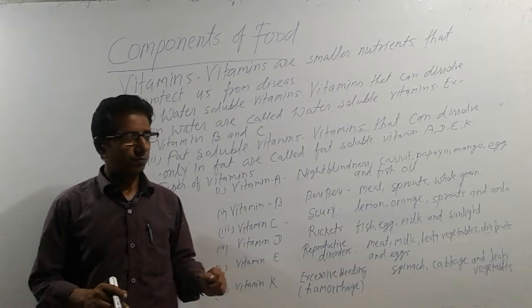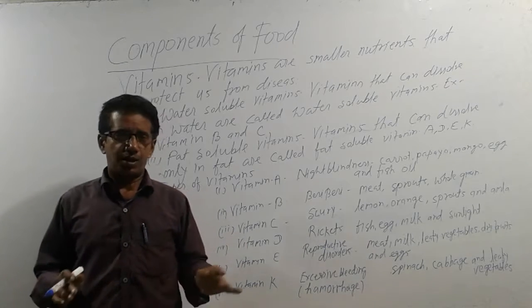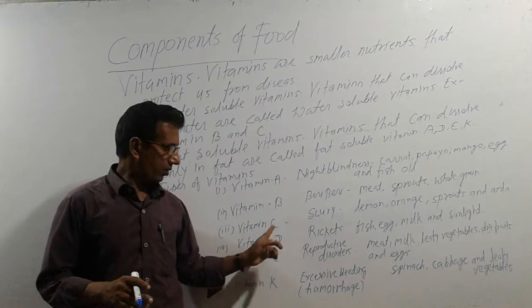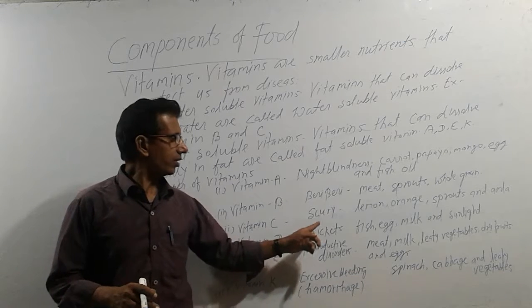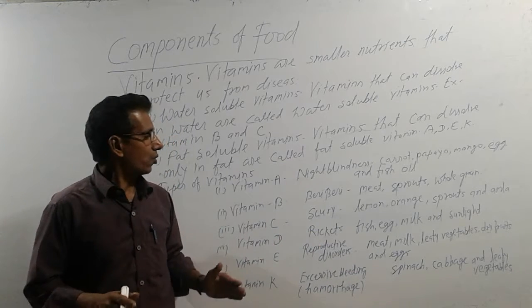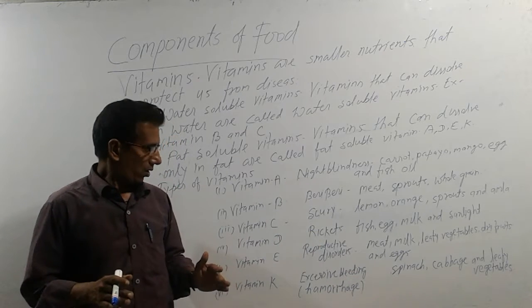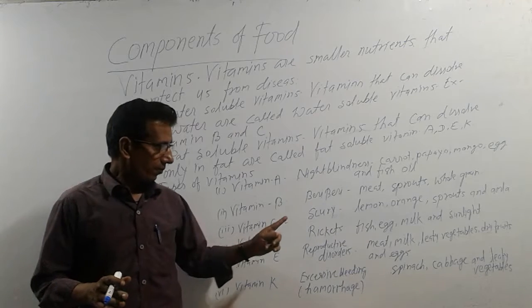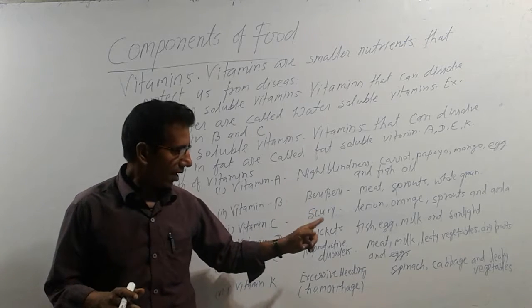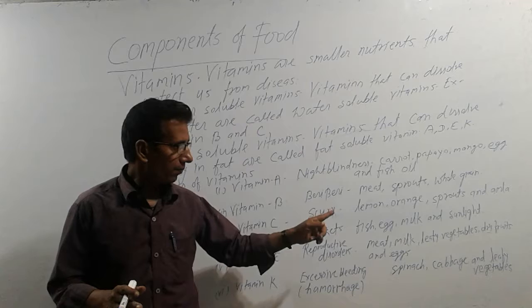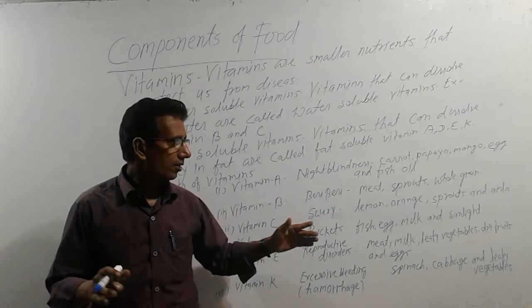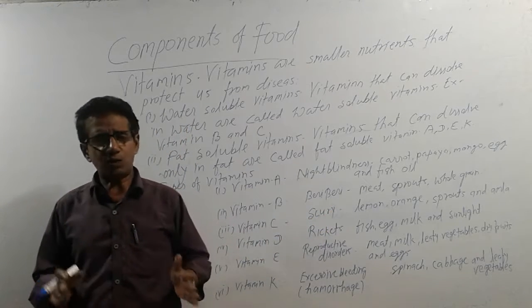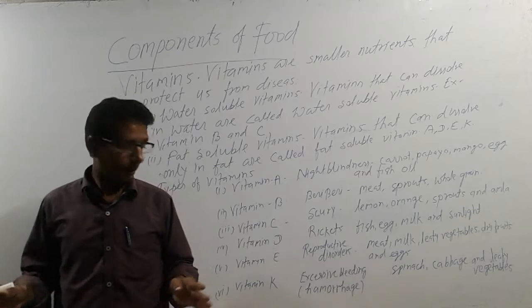Vitamin D: the disease that can be caused by the deficiency of vitamin D is rickets. The sources of vitamin D are eggs, milk, and sunlight. Sunlight also gives us vitamin D.